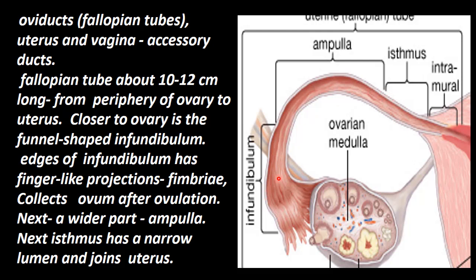After the infundibulum, the next portion is the wider part called the ampulla. Then comes the isthmus, which is the narrow part. The isthmus is narrower than the ampulla, has a narrow lumen, and it joins with the uterus. This completes the tubular structures of the female reproductive system.